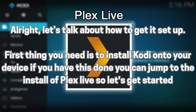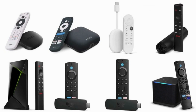Alright, let's talk about how to get it set up. First thing you need is to install Kodi onto your device. If you have this done, you can jump to the install of Plex Live. If you're wanting to install Kodi on Android TV or Google TV devices — including the NVIDIA Shield, Chromecast with Google TV, Google TV Streamer, On 4K Box, and similar systems — you simply have to go to the Google Play Store to get the APK.